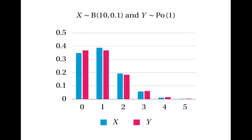Here's a graph which shows that this is indeed the case. The probabilities for the binomial distribution with parameters 10 and 0.1 are in blue, and the probabilities for the Poisson distribution with parameter 1 are in red. We can see that these two distributions are roughly the same — it's not a very good approximation, but the probabilities aren't that far apart and the general shape is the same in both cases.